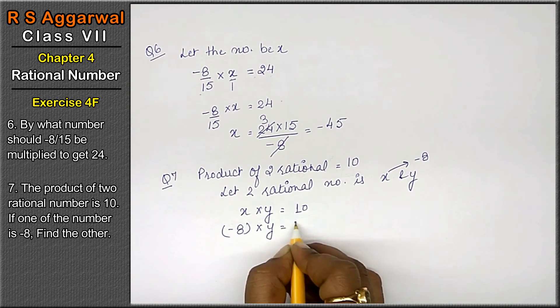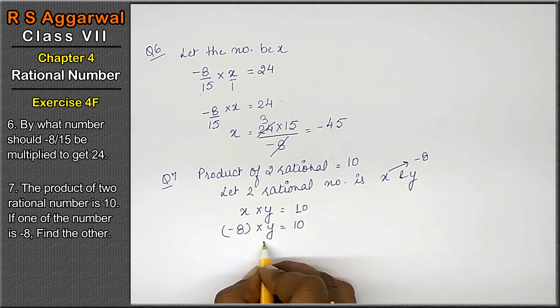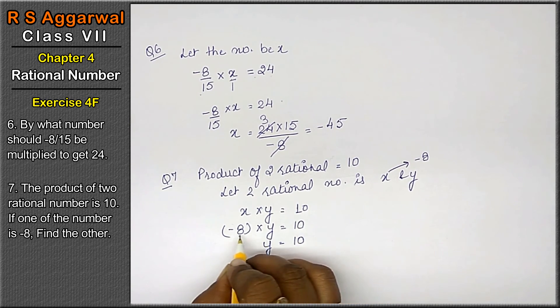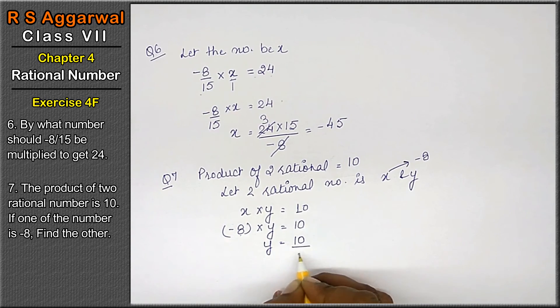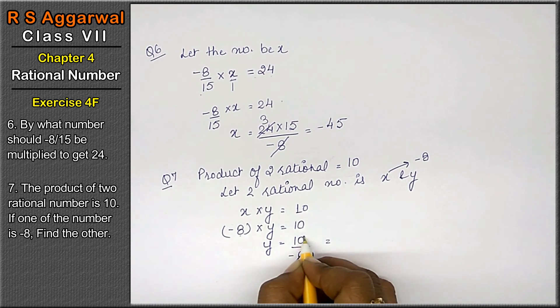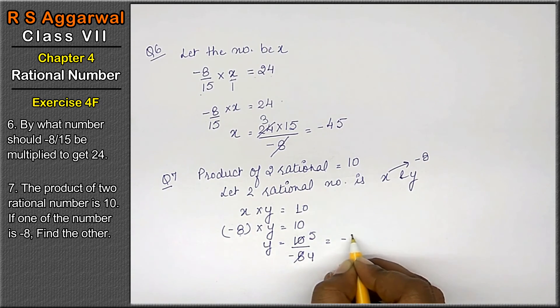y as it is, 10 as it is aagya. Now, y yeh hi rahega, 10 yeh multiply mein hai y ke saath, idhar aake divide mein aajayega. Now, 2 fours are 8, 2 fives are 10. Minus 5 upon 4 is the answer.